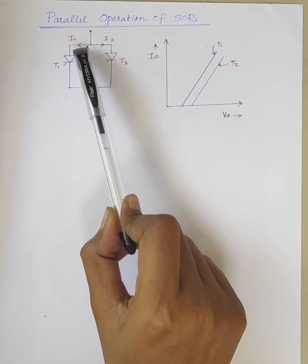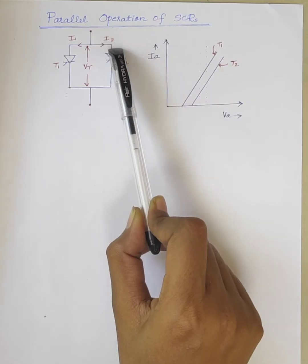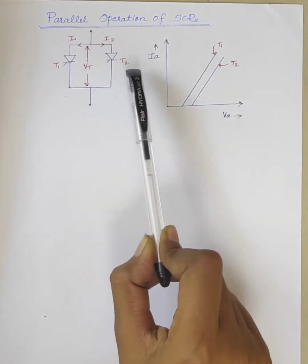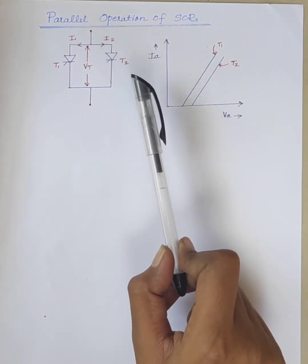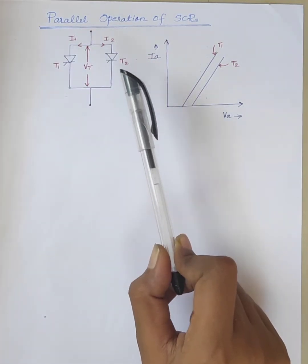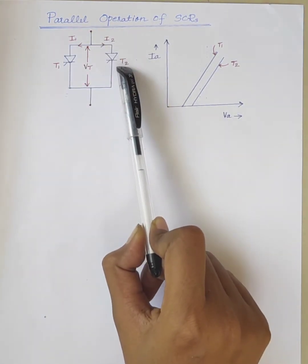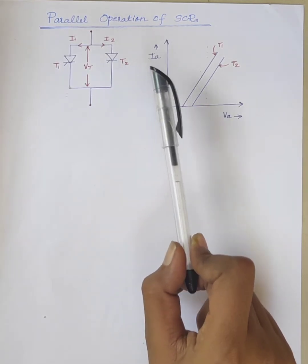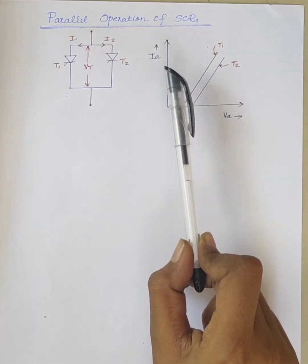Current through SCR1 is I1 and through T2 is I2. The voltage across the SCRs T1 and T2 is VT. In parallel connection, it is expected that individual SCRs share load current equally, meaning I1 equals I2. But due to various factors, the string efficiency is less than unity.